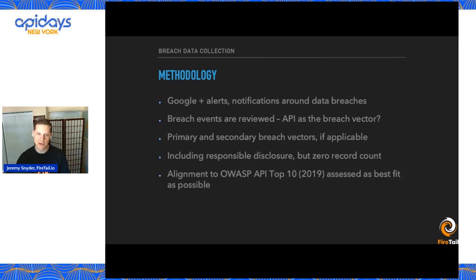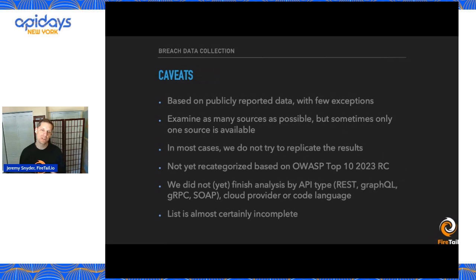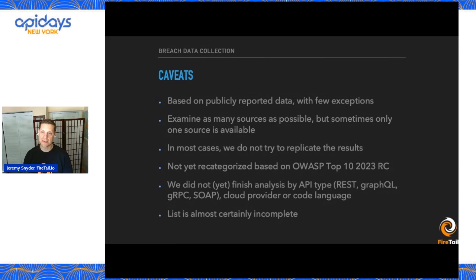That's a little bit about the methodology. Some caveats and limitations: this is based on publicly reported data. There are just a couple of exceptions where we had tips from people connected to the events who gave us information about how or why something appeared to be — or not to be — related to an API breach. We examine as many sources around a breach event as possible, but sometimes only one source is available.